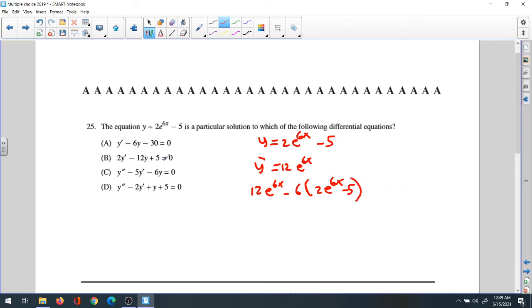So 12e^(6x) minus 6 times 2 is 12e^(6x). Distribute: negative 6 times negative 5 is positive 30 minus 30. You're going to find that 30 minus 30 cancel out, 12e^(6x) minus 12e^(6x) cancel each other.